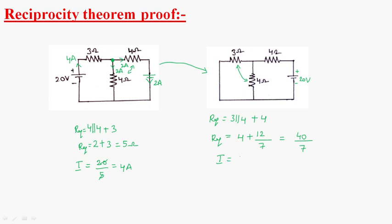The current flowing through the circuit I is equal to 20 divided by 40 by 7, which is 7 by 2 amperes. Now we have to find the current at this point, so we apply the current division rule. The current across the 3 ohms resistor equals the total current, 7 by 2 amperes, multiplied by the opposite resistance 4, divided by R1 plus R2, that is 3 plus 4. This gives 14 by 7, which is equal to 2 amperes.